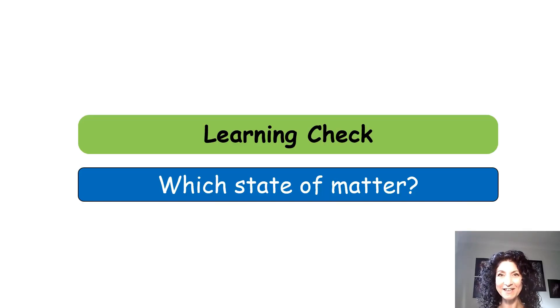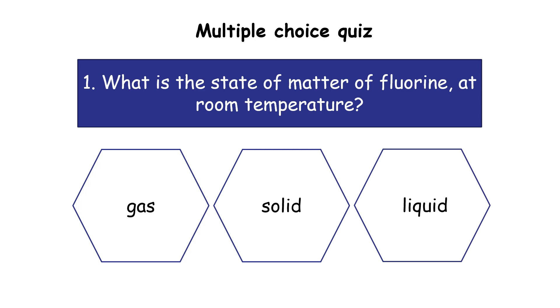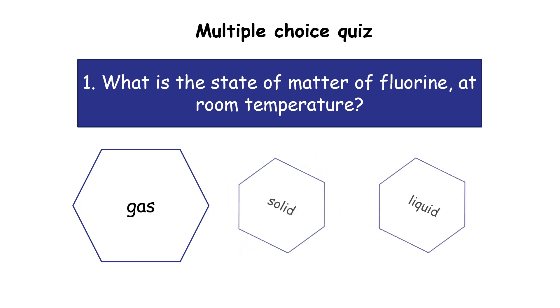Final hurdle, everybody. The last learning check. This is called which state of matter? Multiple choice. Good luck. Question 1. What is the state of matter of fluorine at room temperature? Gas, solid or liquid? The answer is gas.